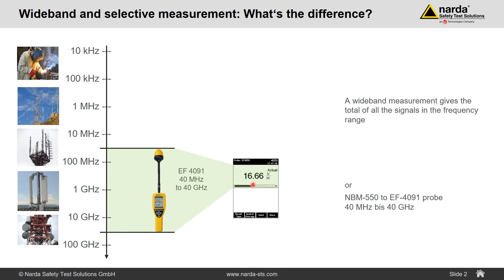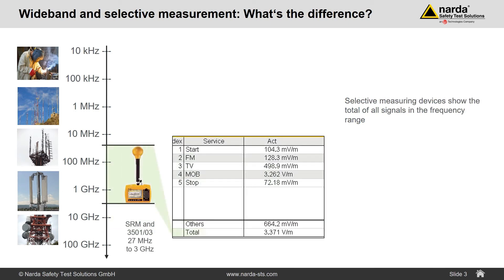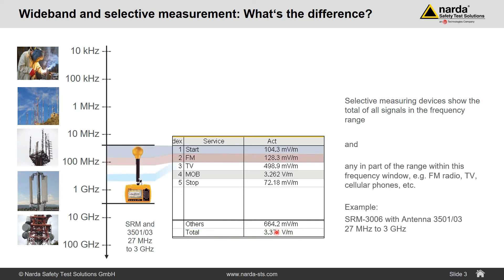If we now switch over to the SRM, the SRM is a selective level meter. We connect in this case an antenna from 27 MHz to 3 GHz. The SRM can give you the total amount of all transmitters inside 27 MHz to 3 GHz — for example all FM stations, all TV stations, and some of the mobile radio stations. But it can also give you each service individually.